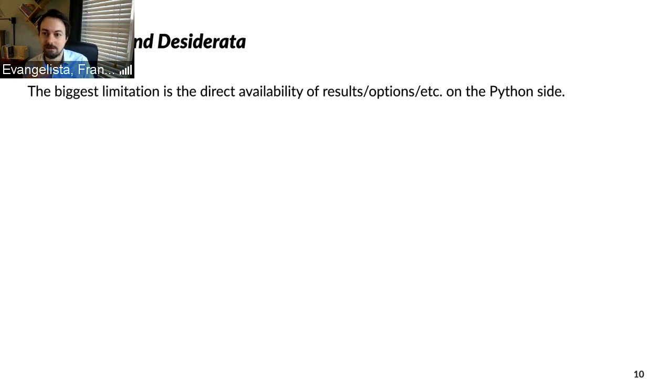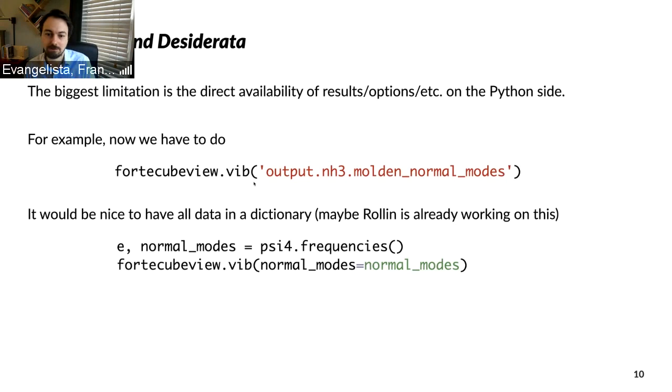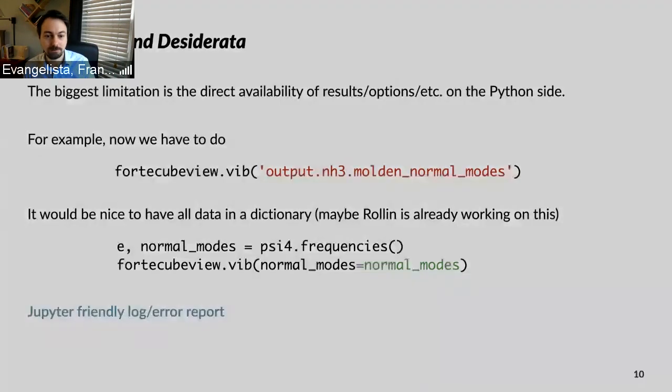For example, you saw that when I wanted to read the vibrational frequencies in, I had to specify the name of the output file. But what I would really like to do is to get all kinds of data that I need for plotting, visualizing, analyzing normal modes directly from a calculation. It sounds like Rollin is moving in this direction where the new Python optimizer returns a lot of data in a Python-friendly format. And as I mentioned, it'd be nice to have user-friendly, Jupyter-friendly log and error reports, because one of the problems the students had in my course was getting a kernel crash - the Jupyter kernel crash - and not knowing what to do to improve things. So these are all things that can be improved.